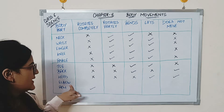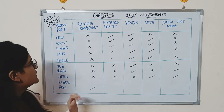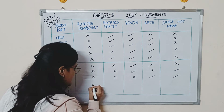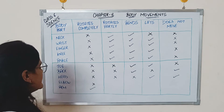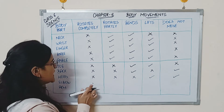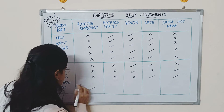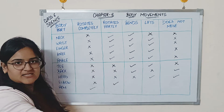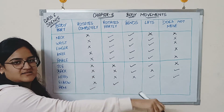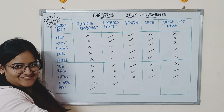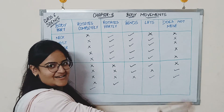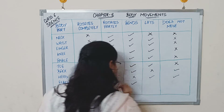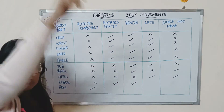Next is the elbow. The elbow cannot rotate completely. It can rotate partially, it can bend forward, and you can lift it.